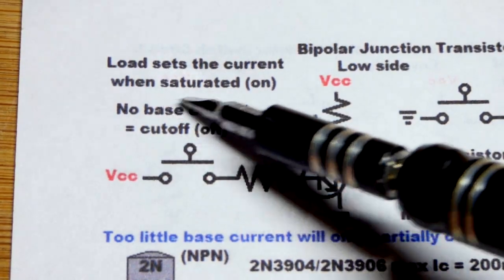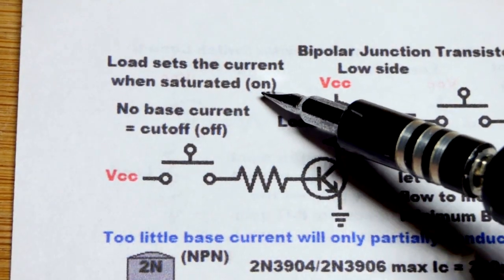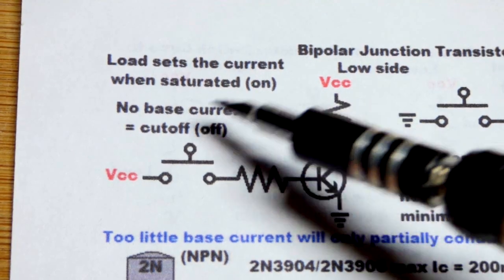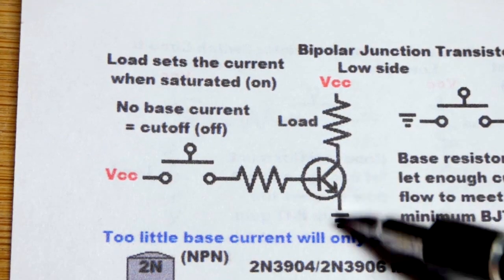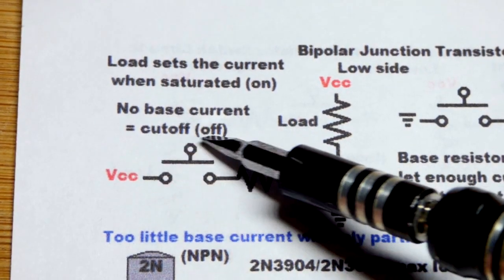When it's conducting fully, that's called saturated. The transistor is on fully, not limiting current. When there's no base to emitter current flow and no collector to emitter flow, we call that cutoff.